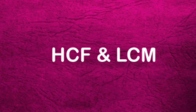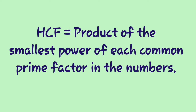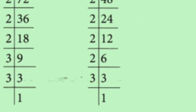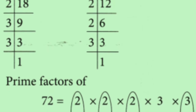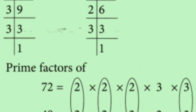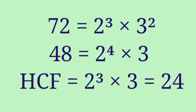Next, how to find the HCF and LCM of 2 or 3 numbers using the prime factorization method. HCF is equal to the product of the smallest power of each common prime factor in the numbers. Consider the numbers 72 and 48. The prime factorization of 72 is 2³ × 3² and 48 is 2⁴ × 3. The common factors are 2 and 3. The least power of 2 is 2³ and the least power of 3 is 3¹. So HCF = 2³ × 3 = 8 × 3 = 24.